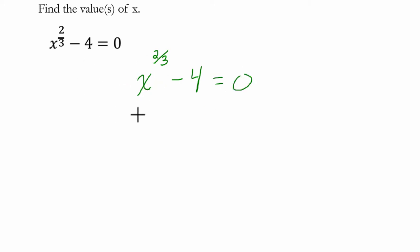So how do we deal with this problem? Well the first thing I'm going to do is add 4 to both sides. I want to get the x term all by itself and this is x to the 2 thirds equals 4.